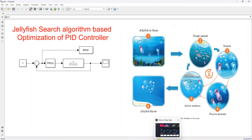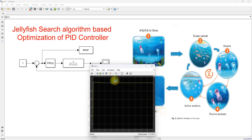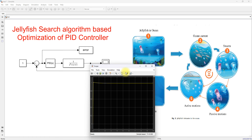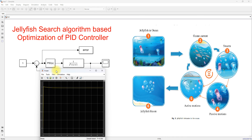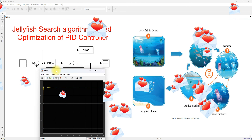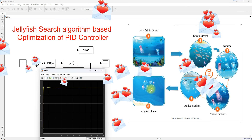Now I'm going to simulate this model and we can see the final result — the step response after optimization of the PID controller parameters. To get a better result, we need to do many trials — nearly 100 trials — to obtain the best result. This is the working of the Jellyfish Search Optimization Algorithm for tuning of the PID controller. Thanks for watching; kindly subscribe to the channel and click the bell icon for notifications about upcoming videos.